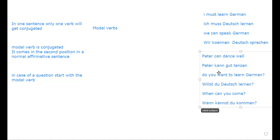For a yes/no question, start with the modal verb; the second verb is not conjugated and goes to the end. For a W-question, the W-word comes first, then the modal verb in second position, then the subject, and the second verb goes to the end without being conjugated.